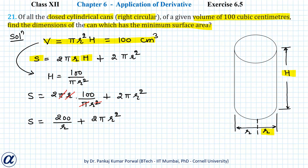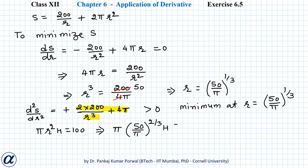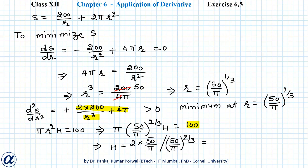Now we find h using the volume expression: πr²h = 100. Substituting r = (50/π)^(1/3) gives π × (50/π)^(2/3) × h = 100. We can write 100 as 2 × 50, and dividing by π × (50/π)^(2/3) yields h = 2 × (50/π)^(1/3), since the (50/π)^(2/3) terms cancel to leave (50/π)^(1/3).